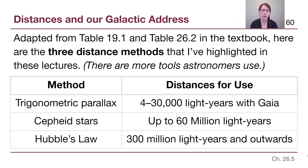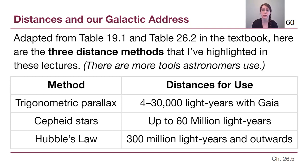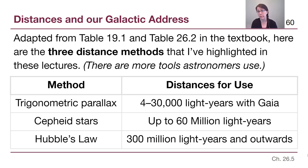Hubble's Law becomes the third distance method we cover in this course. The distance ranges are approximate and highlight that these three methods don't all overlap with each other. There are other distance measurement techniques in our textbook, but these three cover the key understanding that measuring distance requires a tool appropriate for what you're trying to measure — just as you wouldn't use a ruler to find the distance between Grand Rapids and Chicago, you can't use parallax for a distant galaxy.